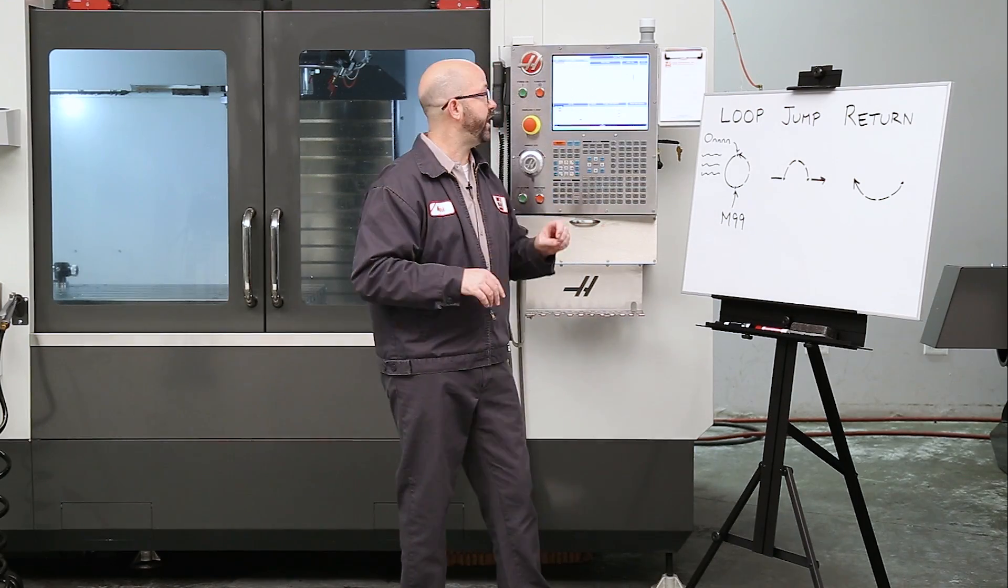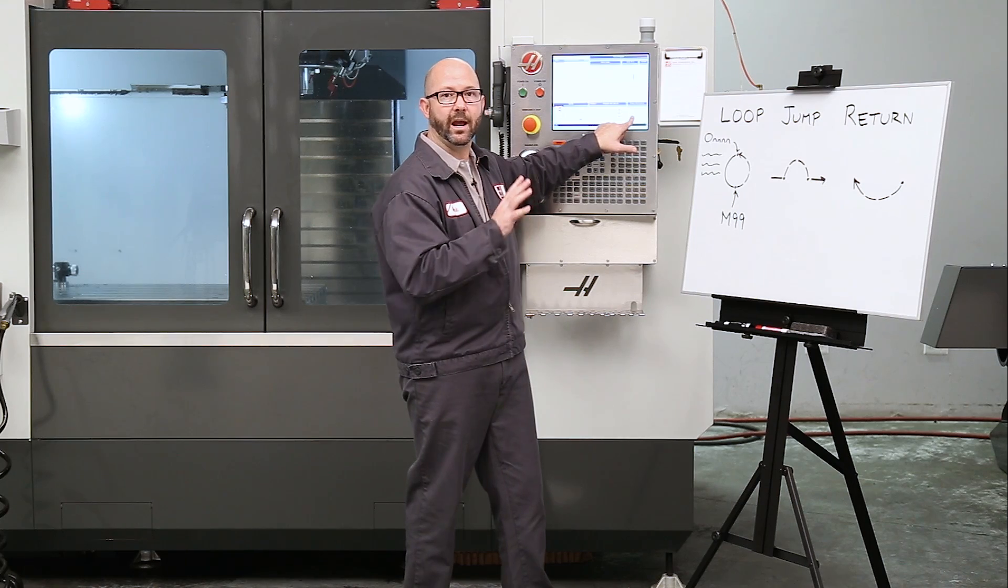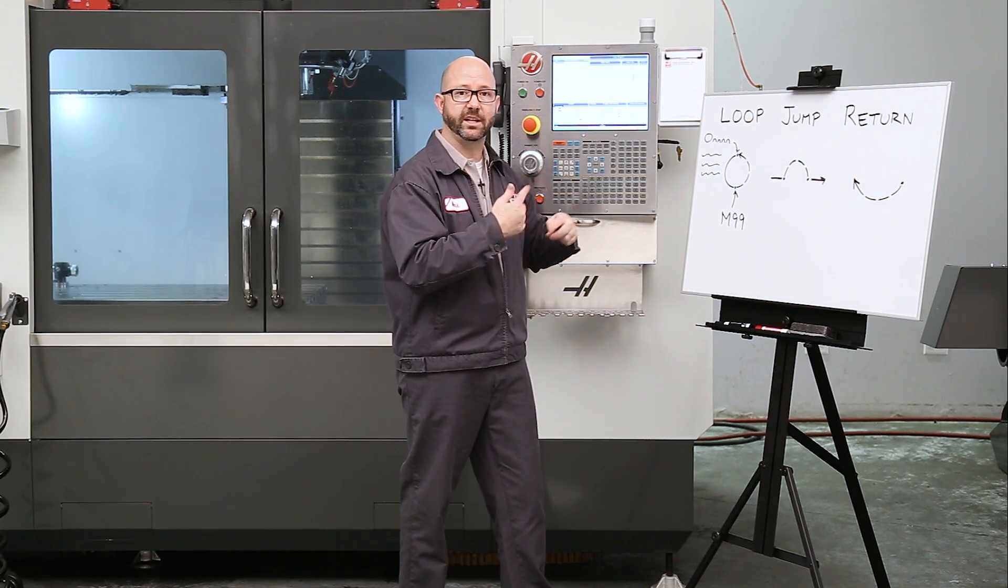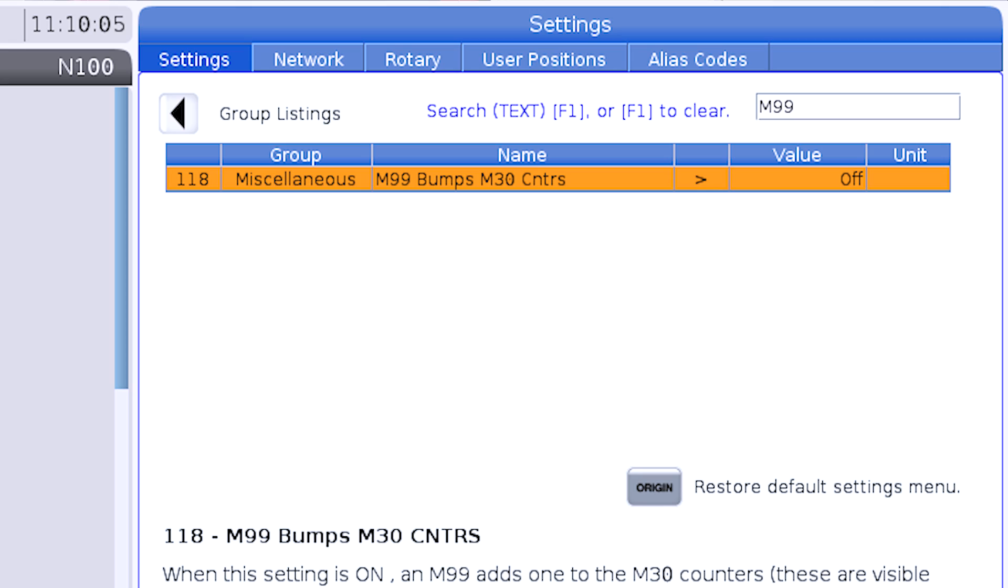Now there is one thing to consider here. It's your M30 counter. If you think that your M30 count is off, it's inaccurate, you might need to turn on setting 118. That's M99 bumps M30 counters.